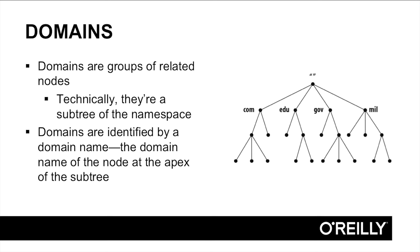Domains are groups of related nodes. Technically, they're a subtree of the namespace, everything at a particular node of the namespace and below that point. Domains are identified by a domain name. That is, the domain name of the node at the apex or top of the subtree.